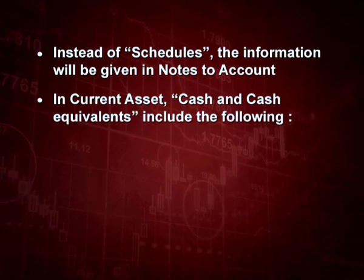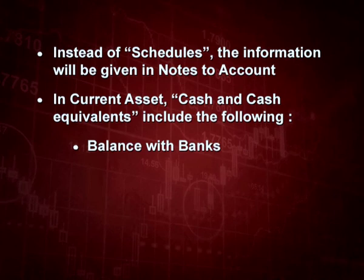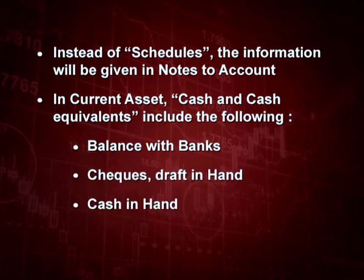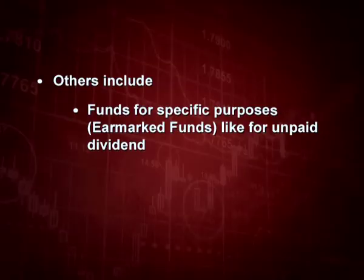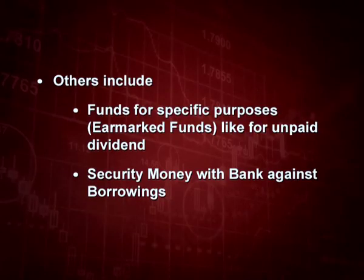Under current assets, there is an item called cash and cash equivalents, which includes: balance with banks, cheques and drafts in hand, cash in hand, and others. Others means funds for specific purposes, known as earmarked funds — for example, funds for unpaid dividends. It also includes security money deposited with the bank against borrowings. If the bank requires you to keep money as security against borrowings, that amount is your asset and will be included in the others category.